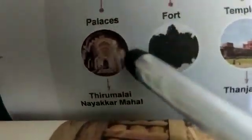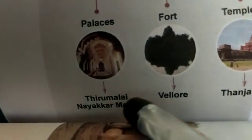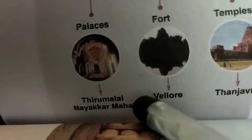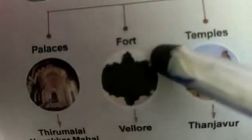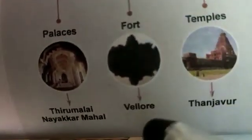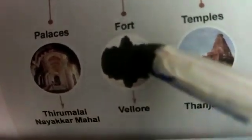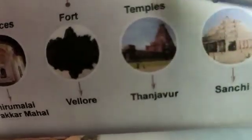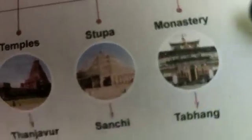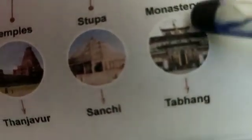Next are monuments. Monuments are buildings. We have lots of types: palaces — for example, Thirumalai Nayak Mahal in Madurai. There are also forts — for example, Vellore Fort. Then temples — for example, Tanjavur Brihadeeswarar Temple. And stupas — for example, Sanchi Stupa, built by Ashoka.